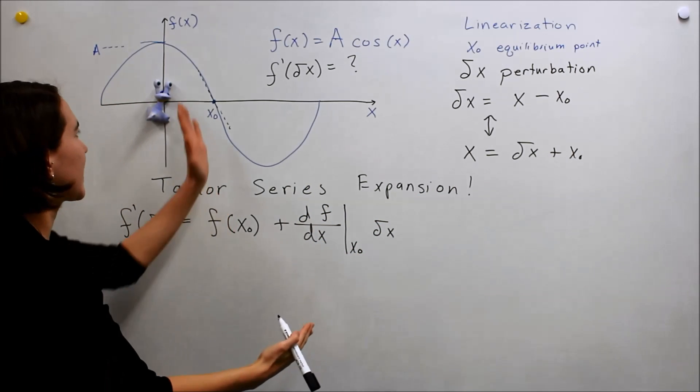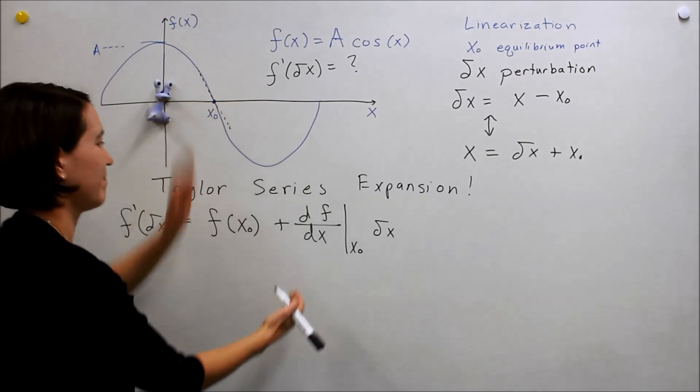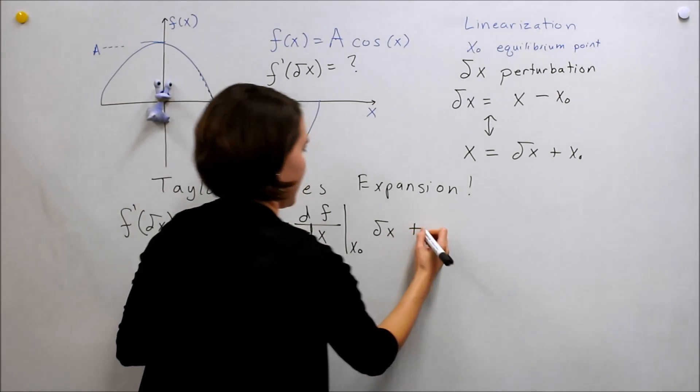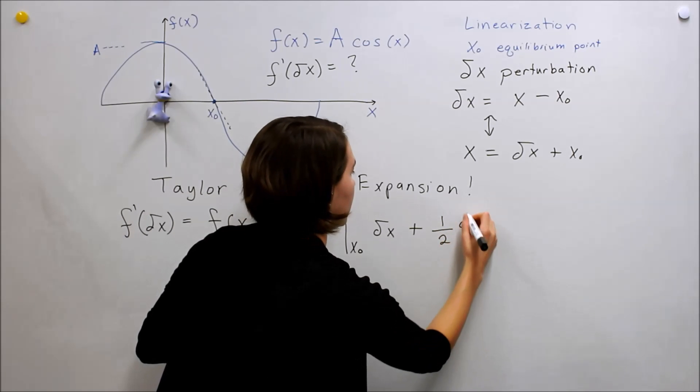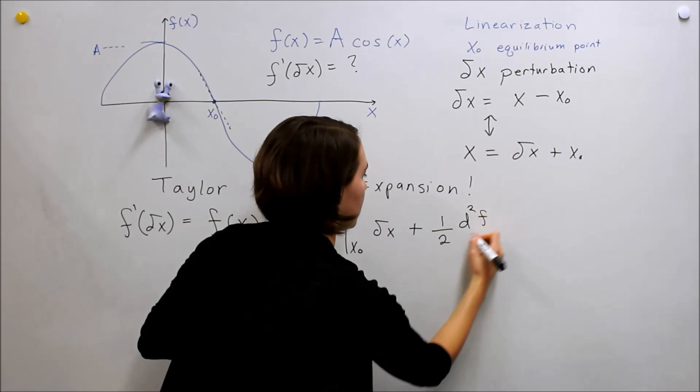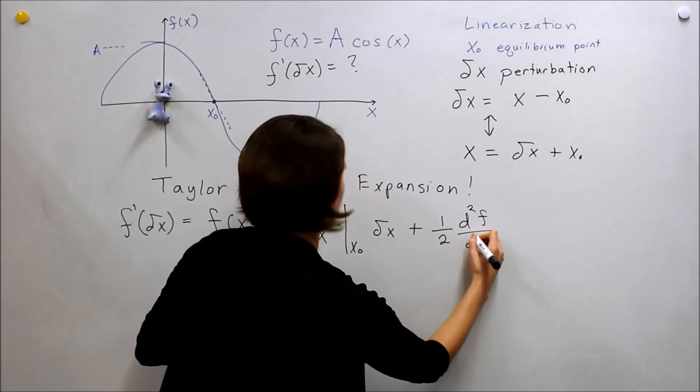So essentially, we're looking at the slope of it here. And there's more terms here in the Taylor expansion. So the next one would be one half to the squared, double derivative of the function,